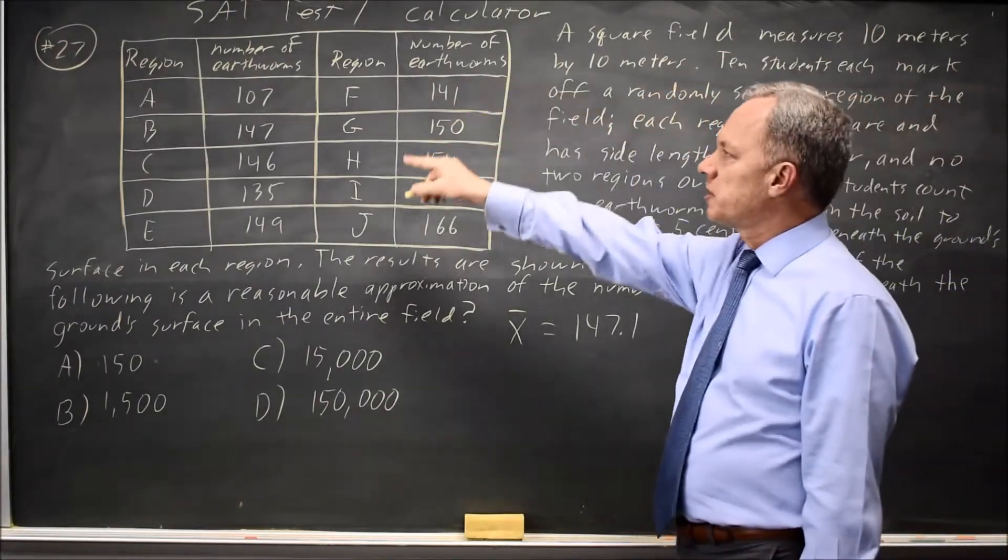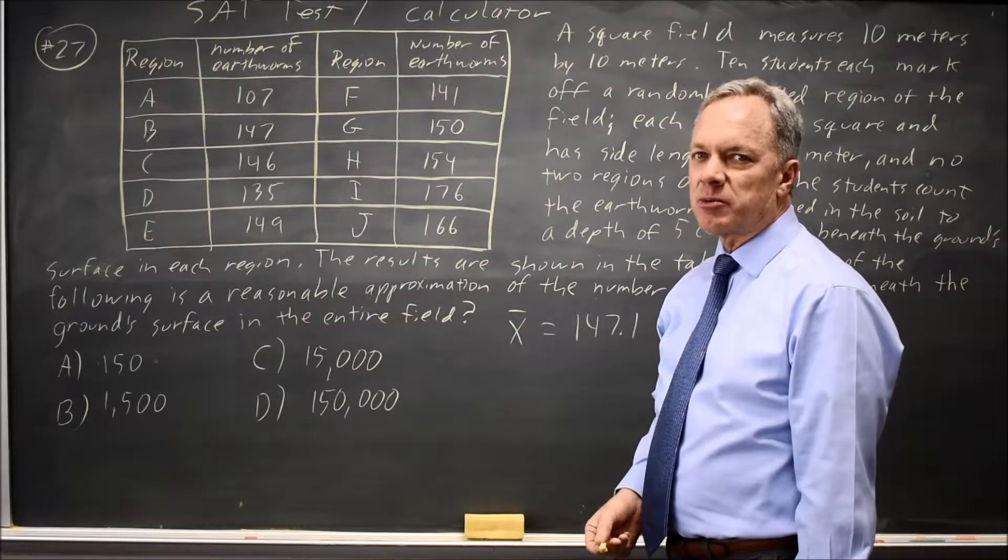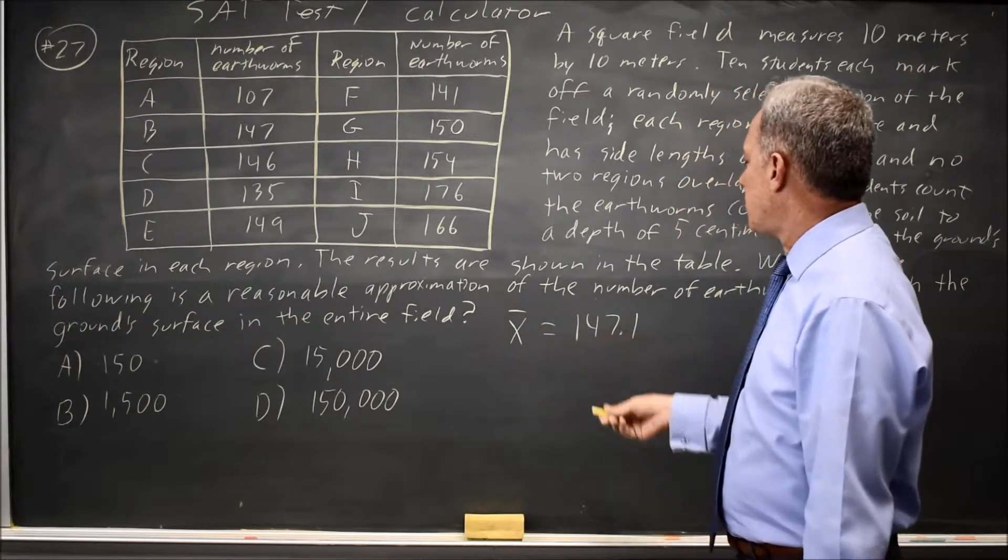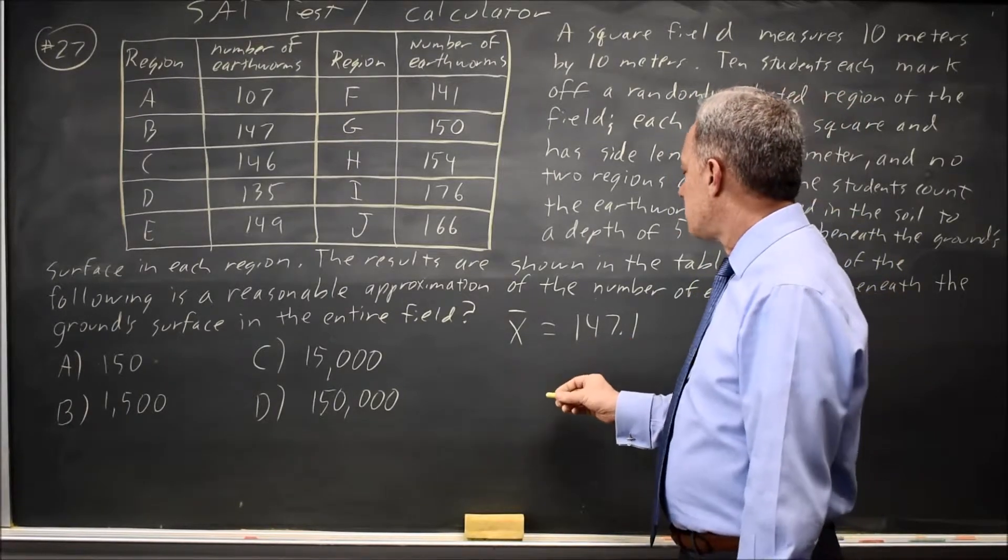Since this is a random sample, it's reasonable to assume that this is representative of the entire field. And so with 100 square meters and 147 earthworms per square meter,